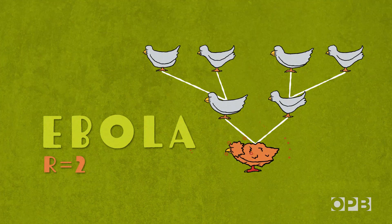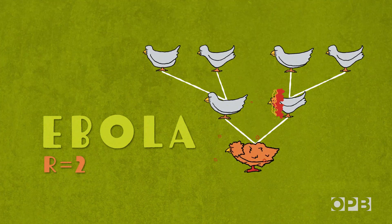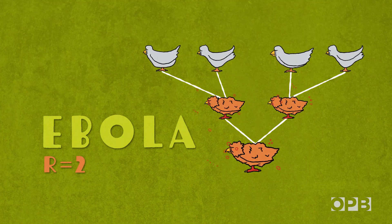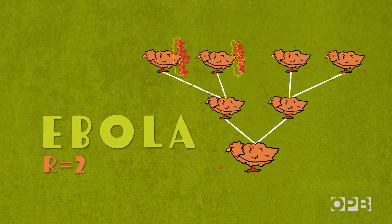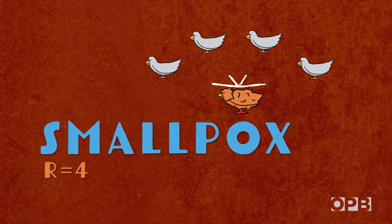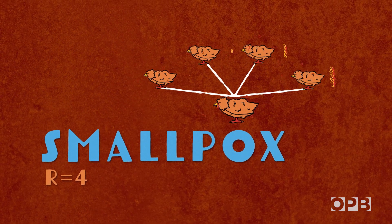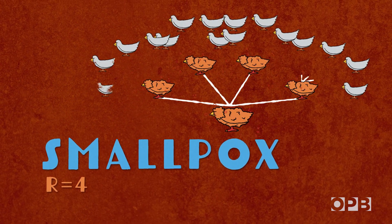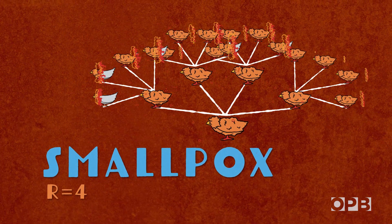A disease like Ebola has an R-value of around 2. If nobody did anything to slow it down, a sick person would infect two others. Smallpox has an R-value of closer to 4, and this seemingly small change makes a huge difference in how quickly each disease spreads.